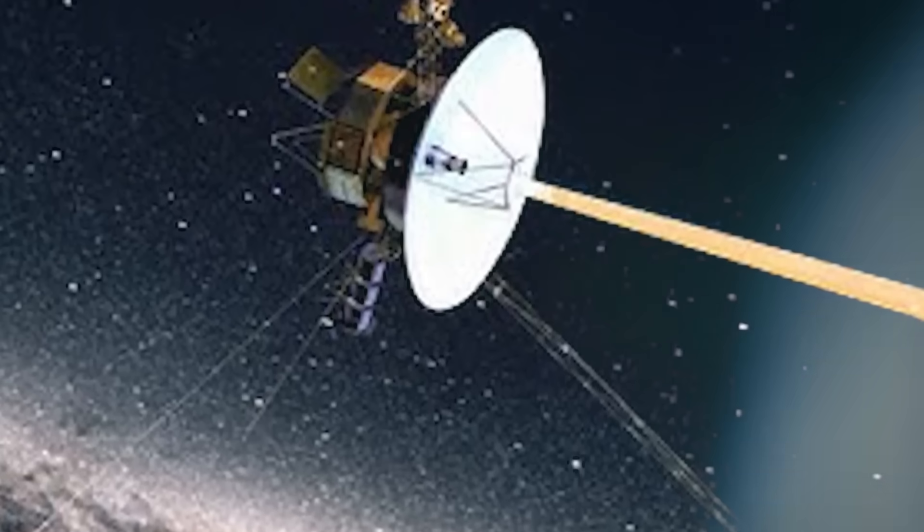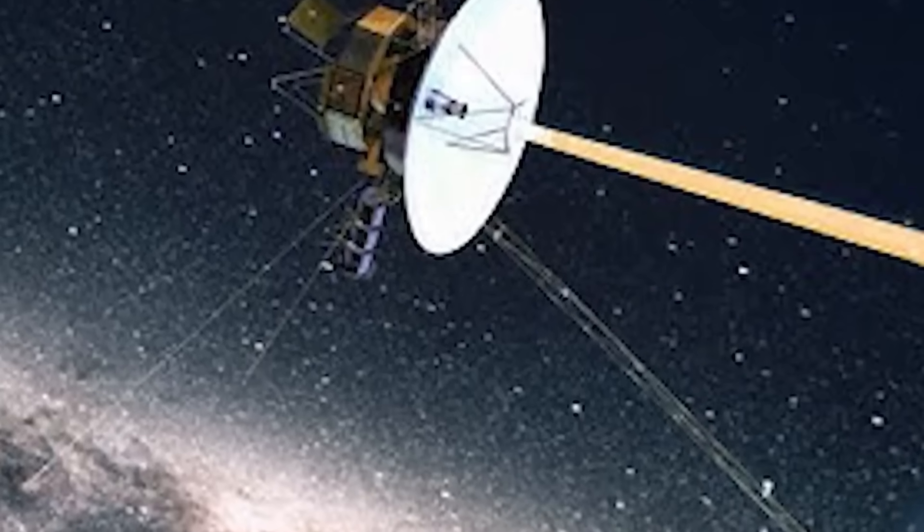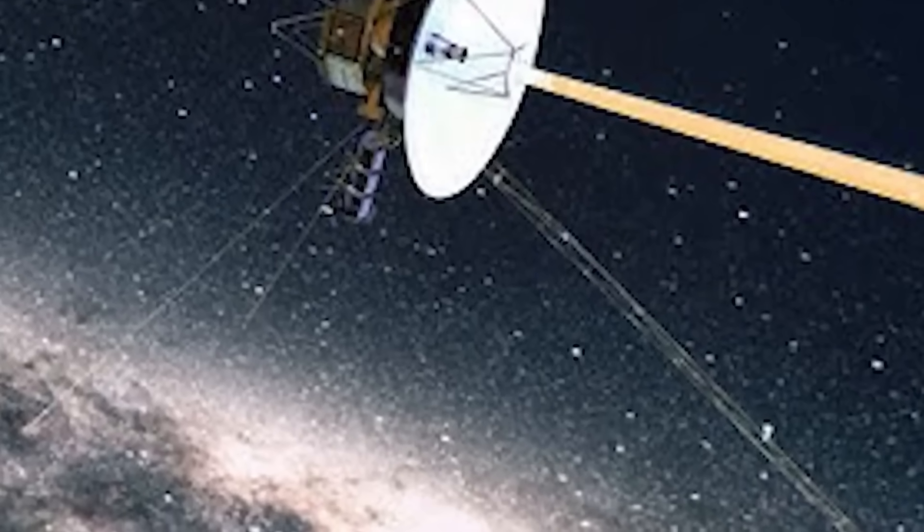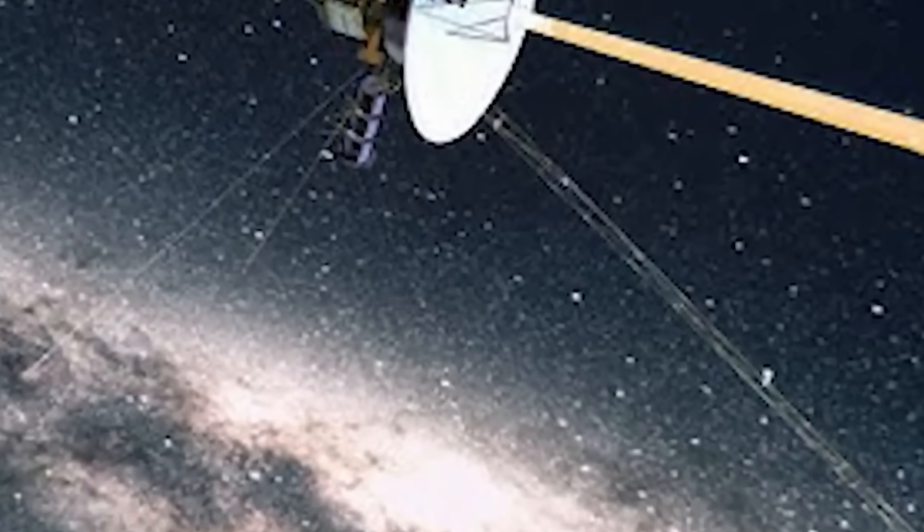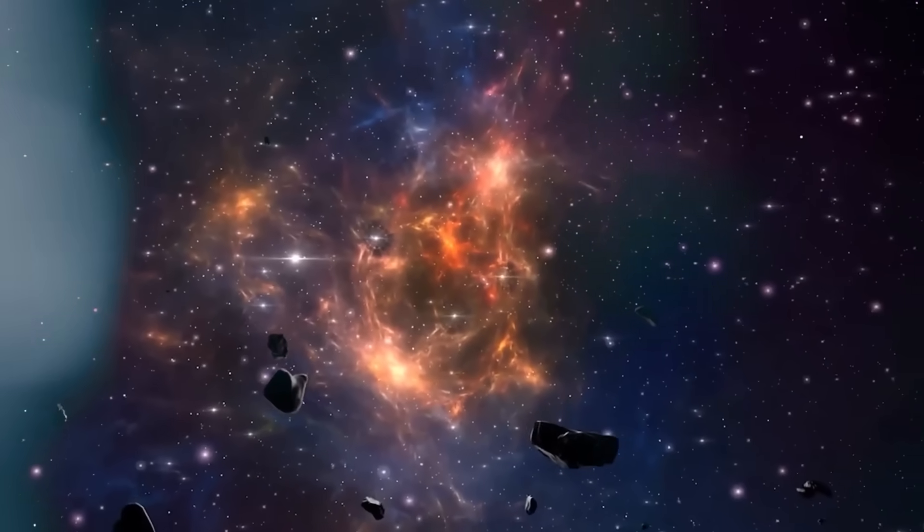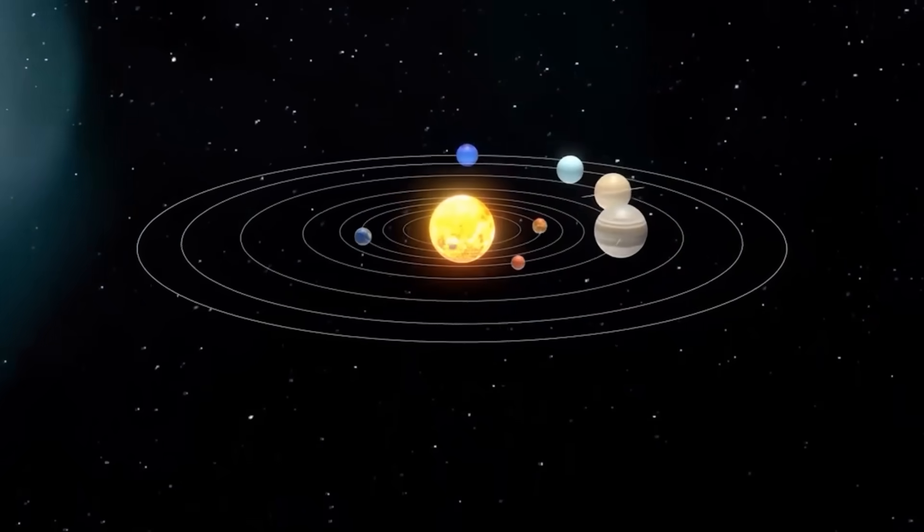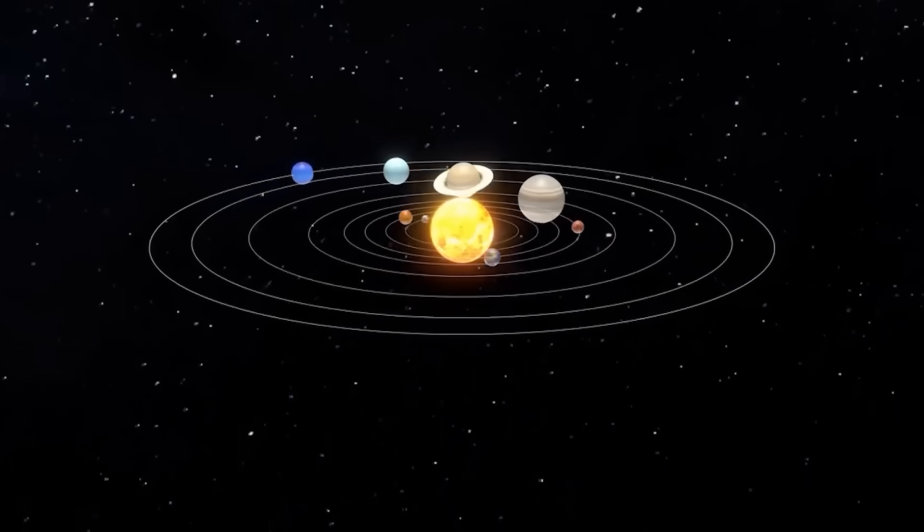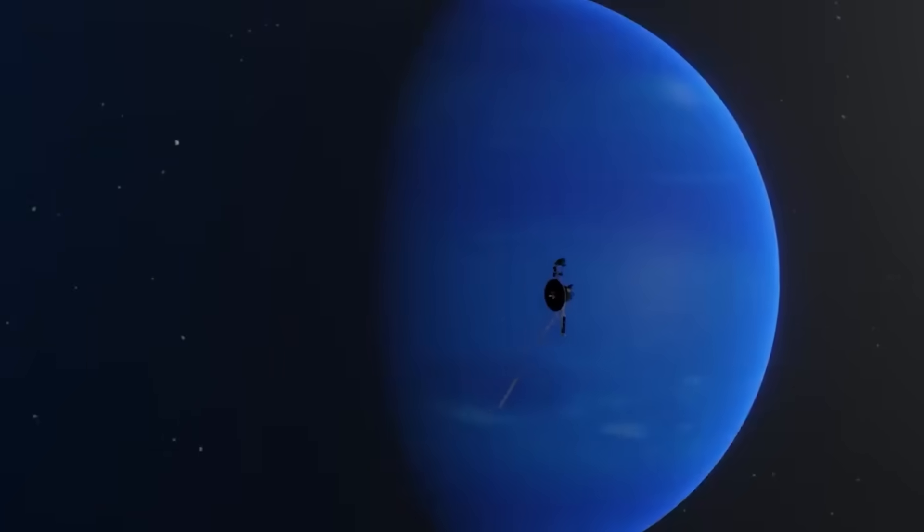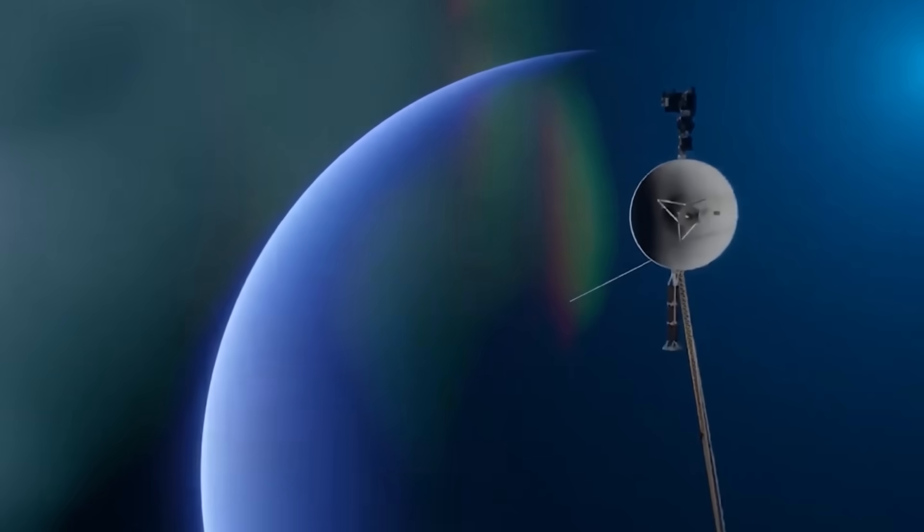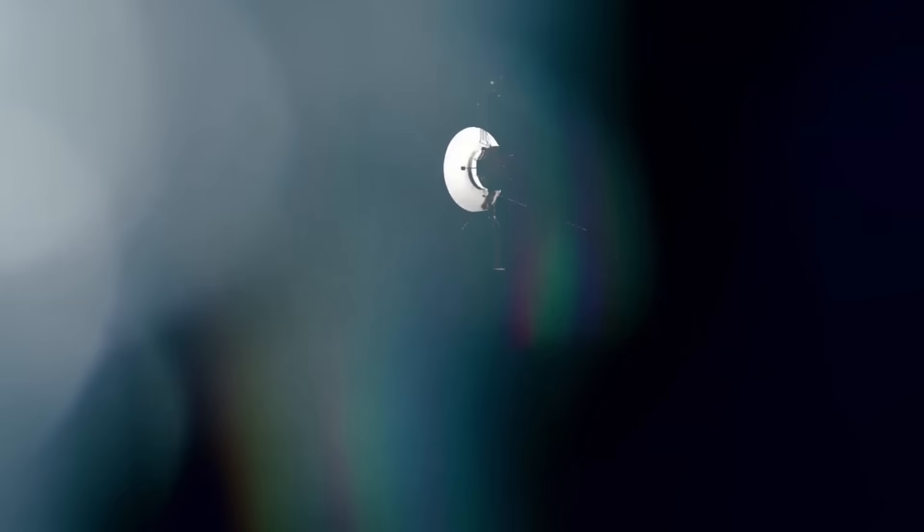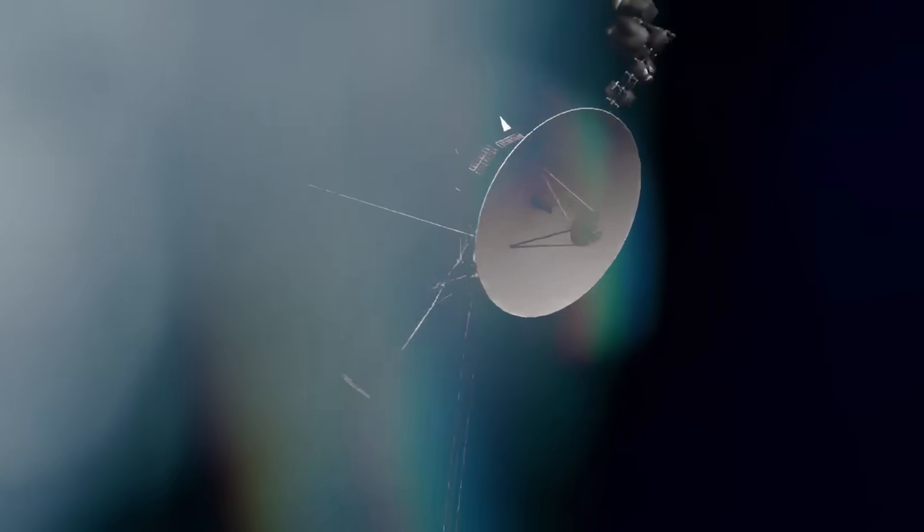Attached to Voyager 2 is a message, a golden disk etched with humanity's greetings, sounds, music, and diagrams. A beautiful attempt at interstellar diplomacy. But within that disk are detailed instructions, how to locate Earth, how to read the disk, how to understand who we are. For decades, this was celebrated as a symbol of hope. But in light of Voyager 2's discoveries, some now see it differently.